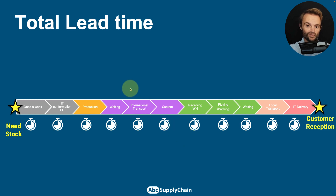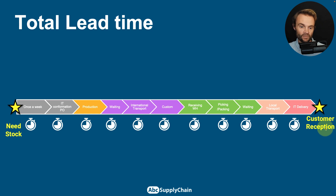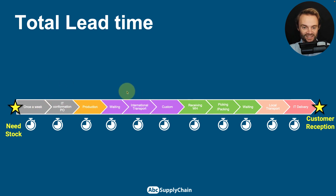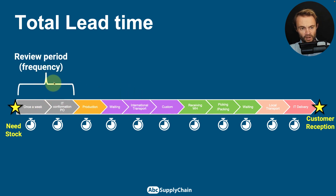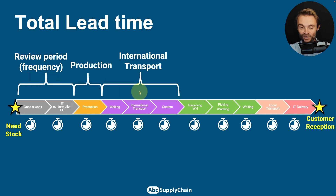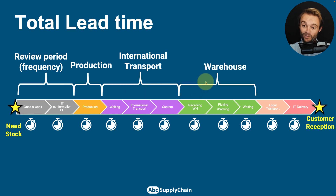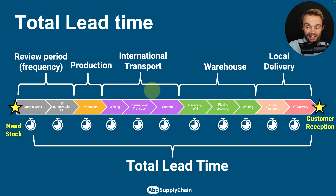The idea is really to cover the total lead time — from when we say we need stock until the customer reception. Between needing stock and customer reception, you have many steps. The first is the review period frequency. Then production lead time, international transport, warehouse lead time, and local delivery. The total lead time is the full span from 'I need stock' to 'I receive my inventory.'